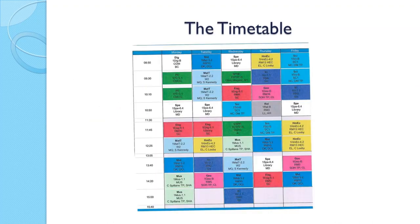Here is a sample timetable. Each block represents a class period and each subject is color coded. For example, home economics is in yellow and geography is in pink. The white blocks are class periods when a student is receiving special tuition or learning support.